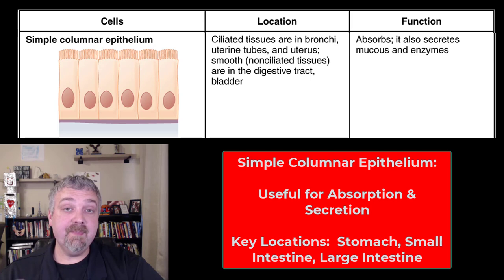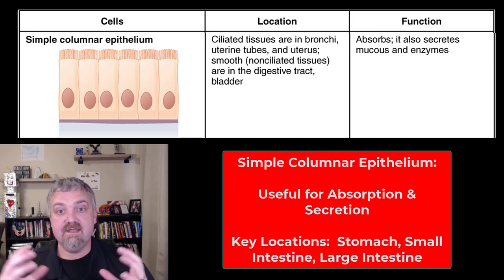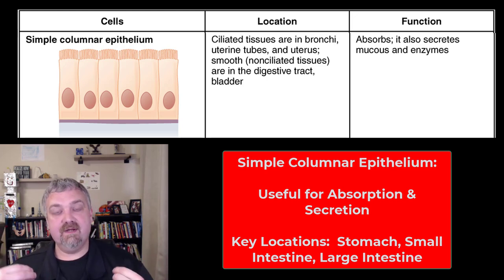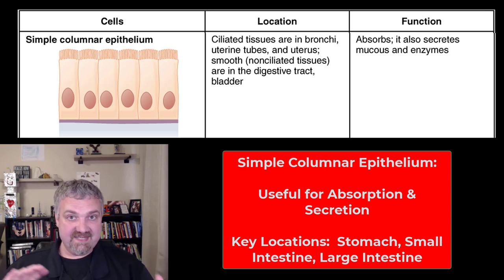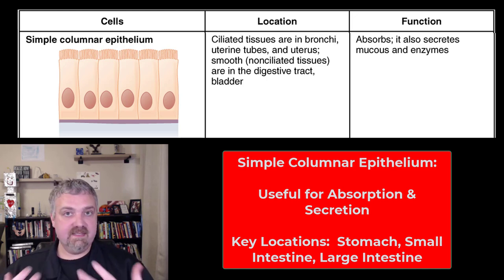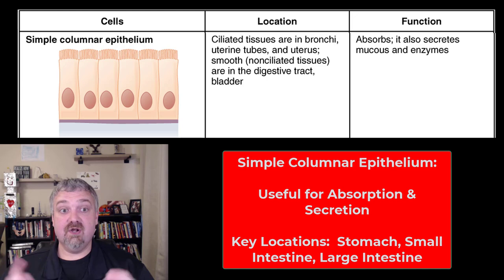The key places where you're going to see simple columnar epithelium is going to be the middle of the GI tract. The mouth, throat, and esophagus need to be protected from hard foods, so those are going to be lined with stratified squamous epithelium. Same thing with the rectum into the anus — think protection on the two ends of the GI tract. The middle of the GI tract — your stomach, small intestine, and large intestine — they're going to be secreting and absorbing tons of material, so those are going to be lined with simple columnar epithelium. The stomach, small intestine, and large intestine are the three key examples of simple columnar epithelium.